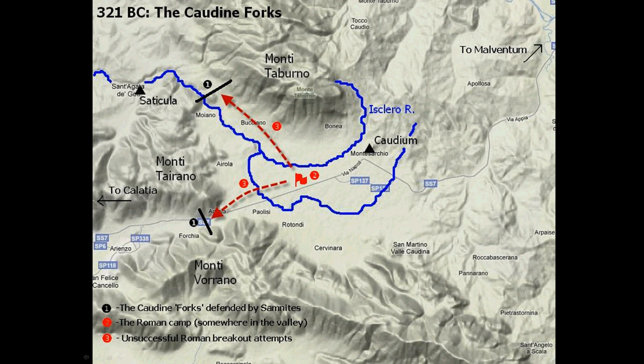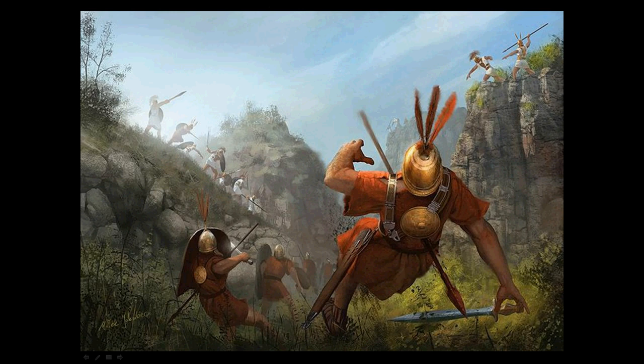The Samnites released them only after the Romans had accepted peace terms and succumbed to the humiliation of 'passing under the yoke,' which was an arch formed by Samnite spears. The Roman Senate rejected the terms once the men had been freed. This battle took place in the Apennine Mountains in southeast Italy. The Roman forces are unknown, the Samnite forces are unknown, and there are no reliable estimates for the casualties.